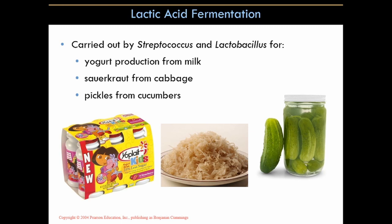For lactic acid fermentation, the main bacteria used are streptococcal species and lactobacilli. This produces yogurt from milk, sauerkraut from cabbage, and pickles from cucumbers. Through lactic acid fermentation these foods are converted via the production of lactic acid. The acidity also leads to preservation of these foods and prevents or curtails bacterial contamination.